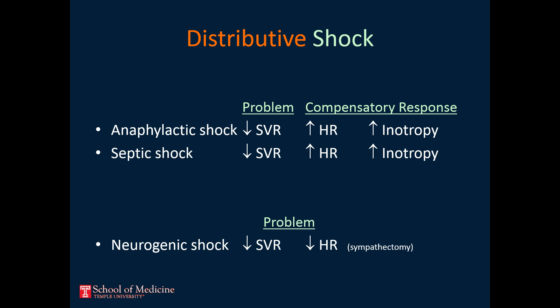In anaphylactic and septic shock, the body compensates for a drop in systemic vascular resistance by increasing heart rate and inotropy. However, in neurogenic shock, the patient is unable to compensate due to loss of sympathetic function. Therefore, patients in neurogenic shock have an unusual combination of hypotension and bradycardia.